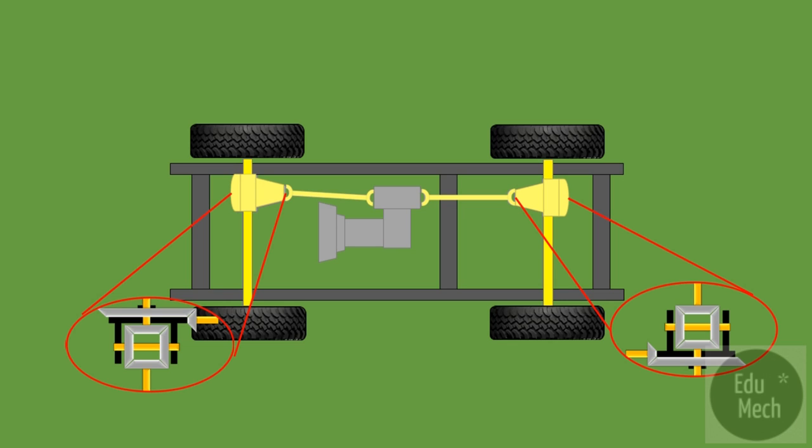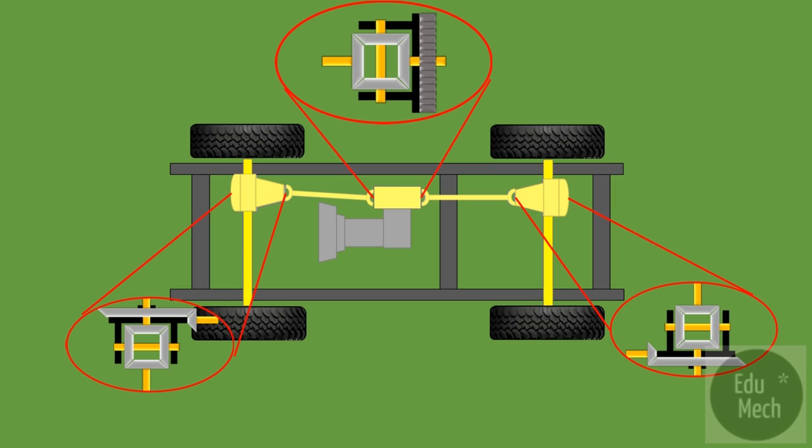is accounted for by the fitting of a third differential inside the transfer box. The third differential allows the front and rear propeller shafts to rotate at different speeds while transmitting equal torque.